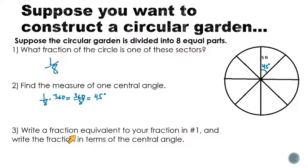Now this says write a fraction equivalent to your fraction in number 1, but write the fraction in terms of the central angle. So I want a fraction that's equivalent to one-eighth but that uses the 45 degrees right here. And so what we know is that one-eighth is the same thing as 45 out of 360. In the same way this is one sector out of eight total sectors, this central angle is 45 degrees out of a total of 360 degrees. So I really want you to understand that this 45 over 360 is representing a fraction or a portion of the total circle.